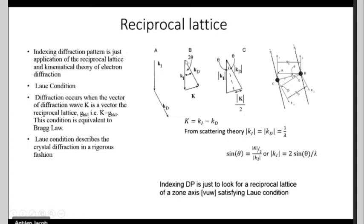In figure B, you can see a single diffraction point. The small k is the wave normal of the incident beam and kd is the wave normal of the diffracted beam. The diffraction vector K (capital) is given by ki minus kd. From scattering theory, the magnitude of ki is 1/lambda, so the magnitude equals 2 sin(theta)/lambda. This diffraction condition — called the Laue condition — differs from Bragg diffraction because here the beam is transmitted rather than reflected. Diffraction occurs when the diffraction vector K matches the reciprocal lattice vector G (hkl).